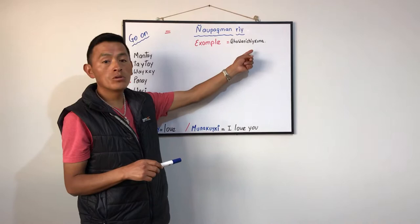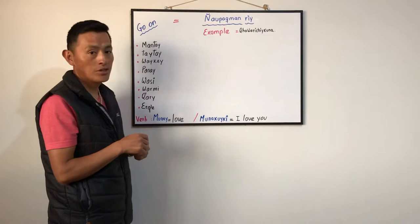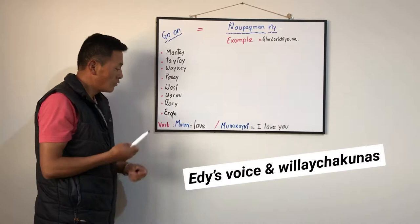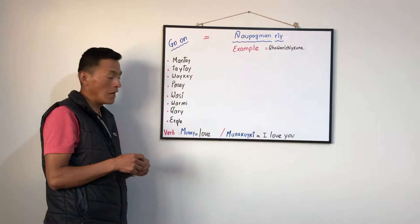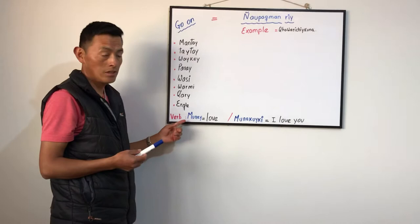For example, in Quechua we say Kawariciguna — maybe it's kind of a long pronunciation. Kawariciguna. All of those words that I wrote here, we're going to make a conjugation with another word that everyone says at some point in their life. Munay, which means love. This verb is irregular.